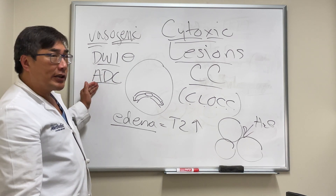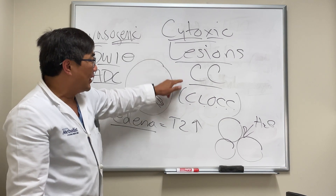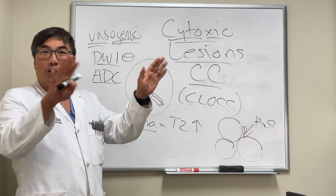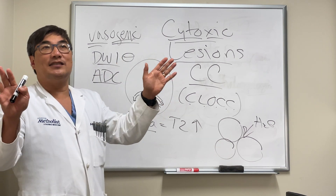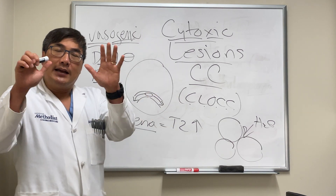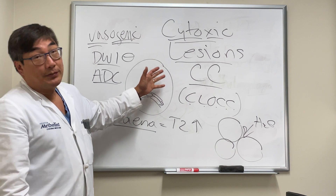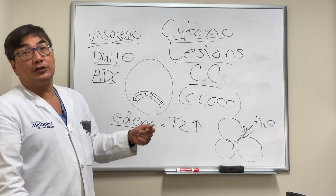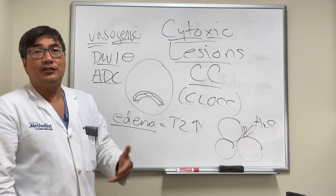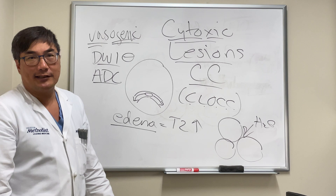If there is restricted diffusion in the splenium of the corpus callosum, that is called a cytotoxic lesion of the corpus callosum — the CLOCK lesion. That means you have to explore the entire extensive differential diagnosis, focusing on toxic, metabolic, and ischemic causes. Sometimes that ischemia is the result of hypertension or drugs, so you need a wide differential when approaching the CLOCK lesion.